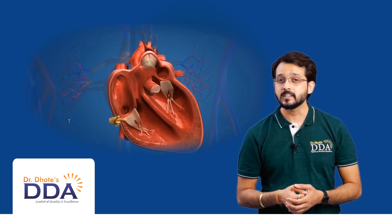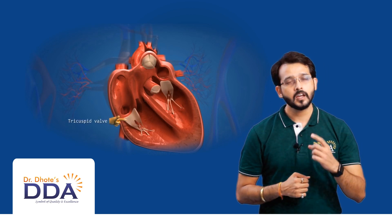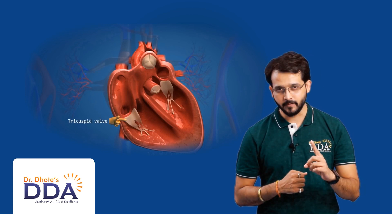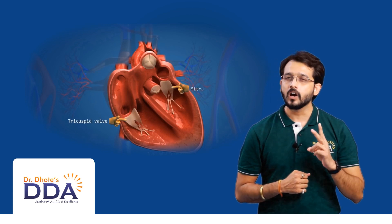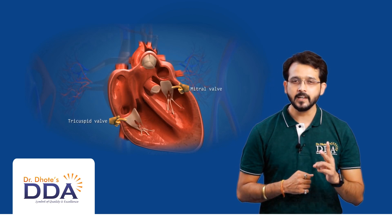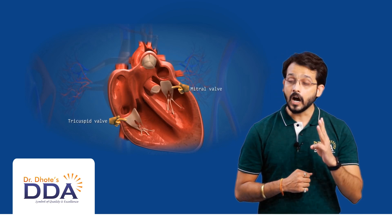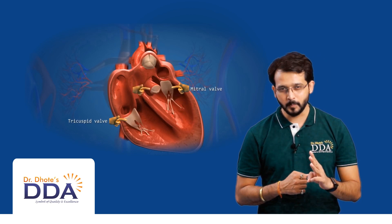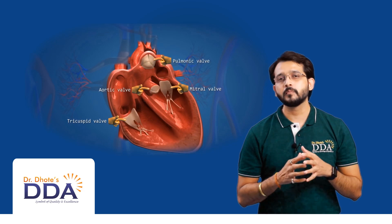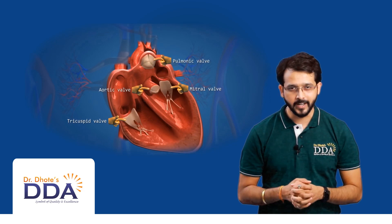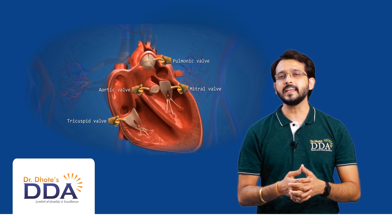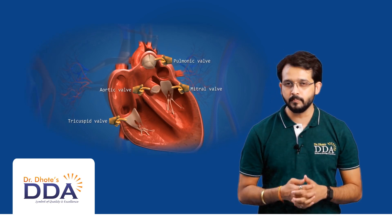The heart has four valves: the tricuspid valve between the right atrium and right ventricle; the bicuspid or mitral valve between the left atrium and left ventricle; the aortic semilunar valve at the opening of the aorta; and the pulmonary semilunar valve at the opening of the pulmonary trunk. These valves prevent backward flow and maintain unidirectional blood flow.